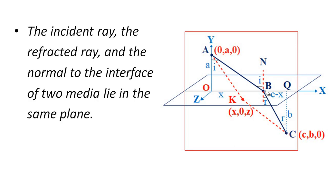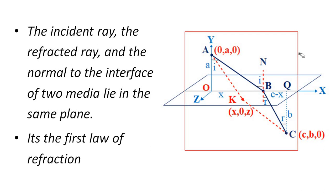Since z equals zero, point K is in the xy-plane. This means the incident ray, the refracted ray, and the normal to the interface all lie in the same plane (the xy-plane). This is the first law of refraction: the incident ray, refracted ray, and the normal to the interface of the two media lie in the same plane.